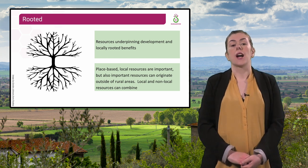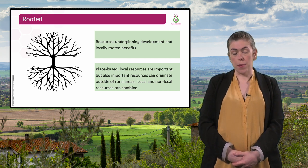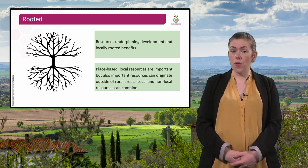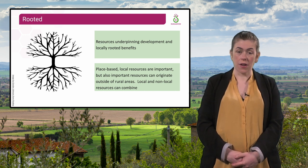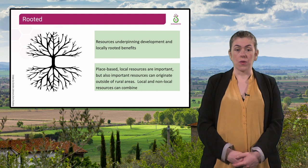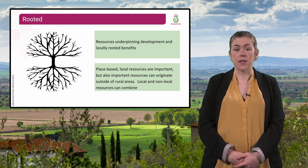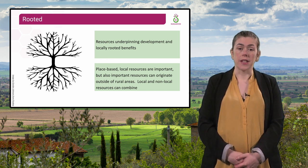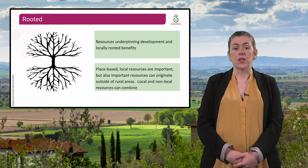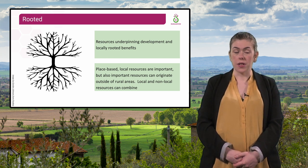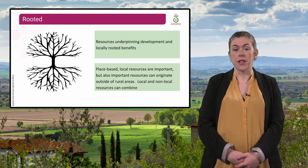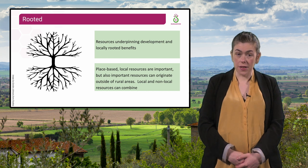Principle number three is that practices should be rooted. This tries to capture thinking around the resources that should underpin development. Place-based local resources are important in rural regeneration, but important resources can also originate outside of rural areas. Local and non-local resources can combine, such as practices based on urban-rural connections. This principle also embodies the idea that benefits are rooted locally, such as creating new or improving existing opportunities in the local rural economy — for example, creating new jobs or improving the quality of existing jobs.